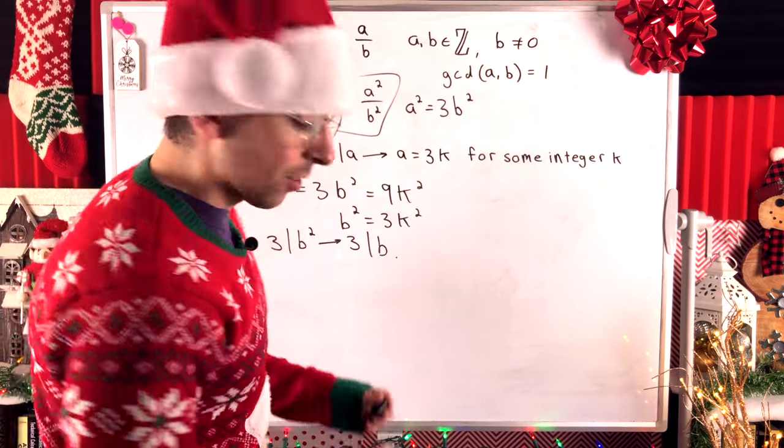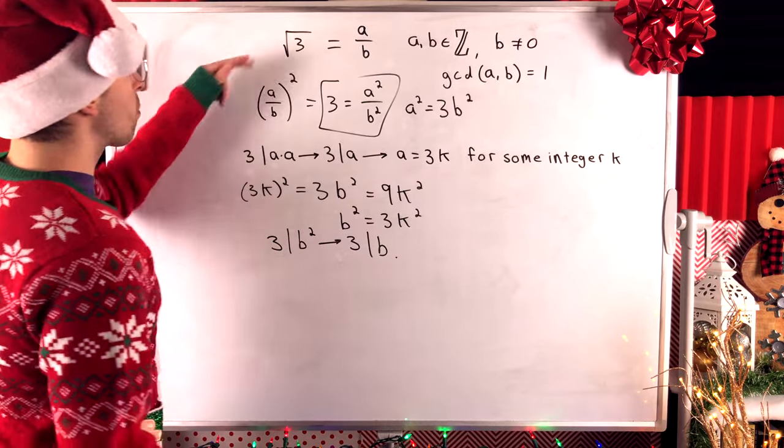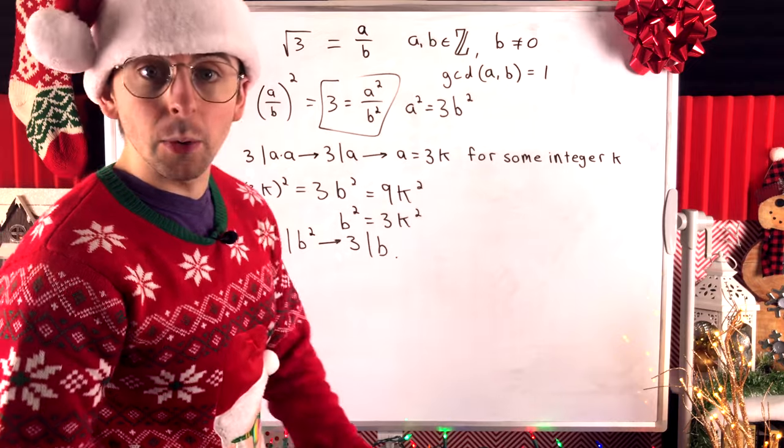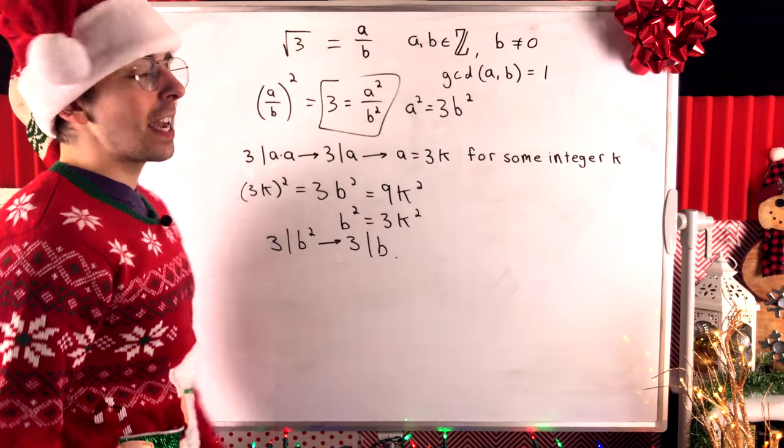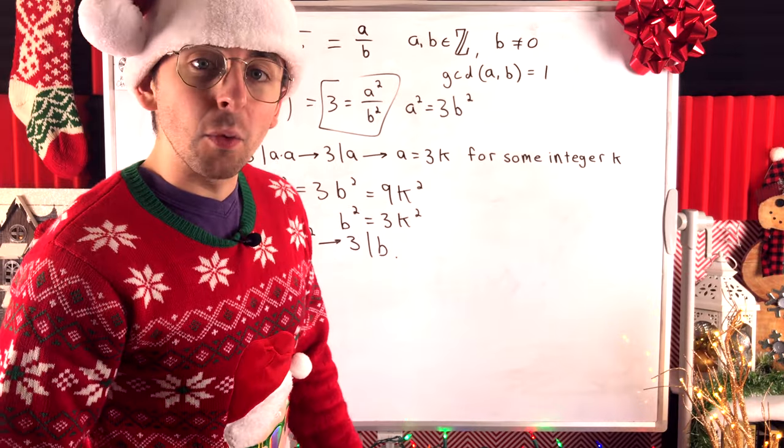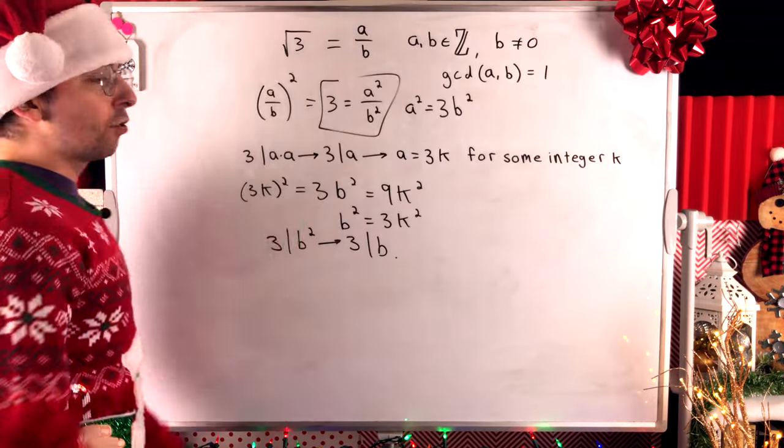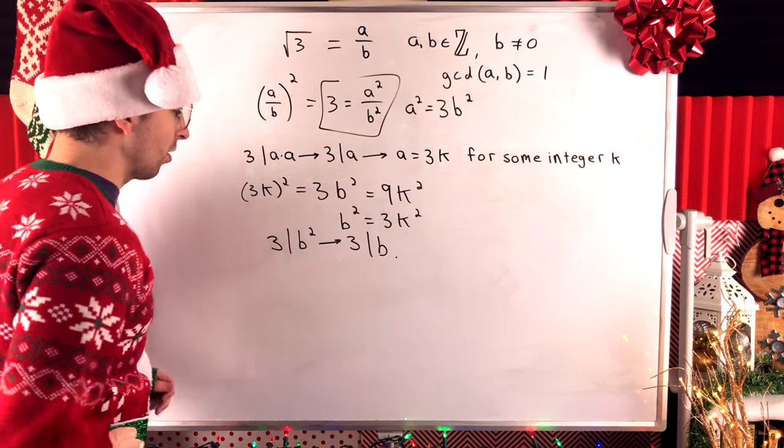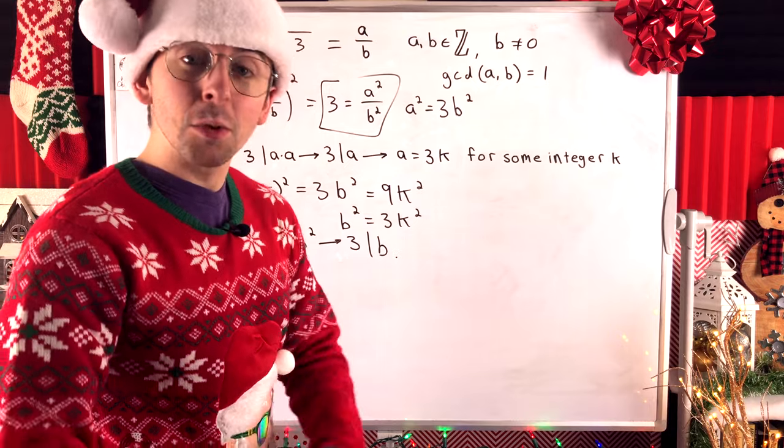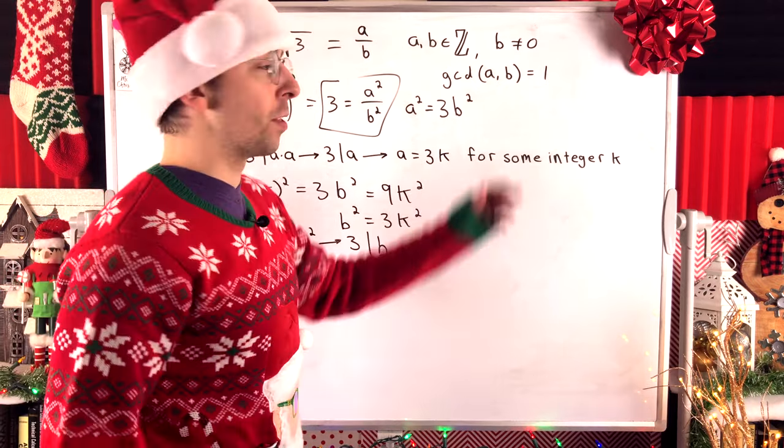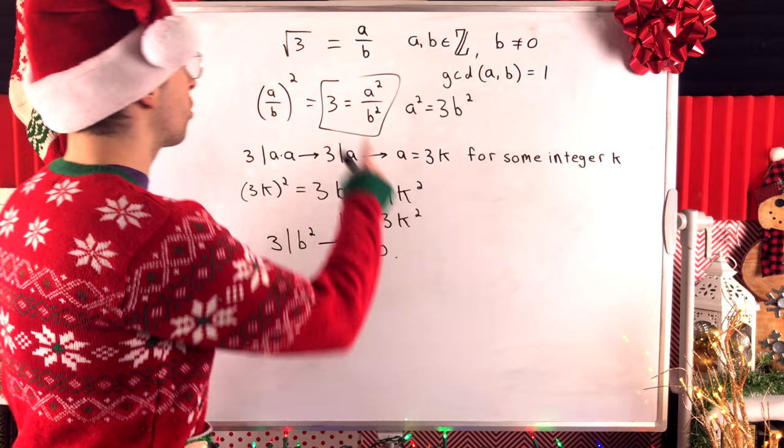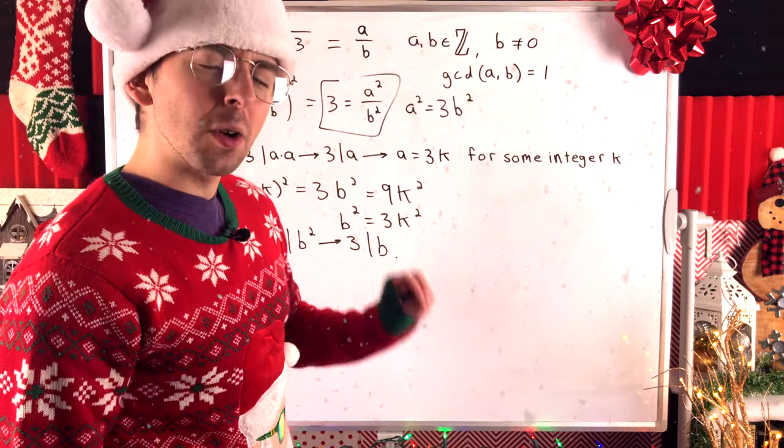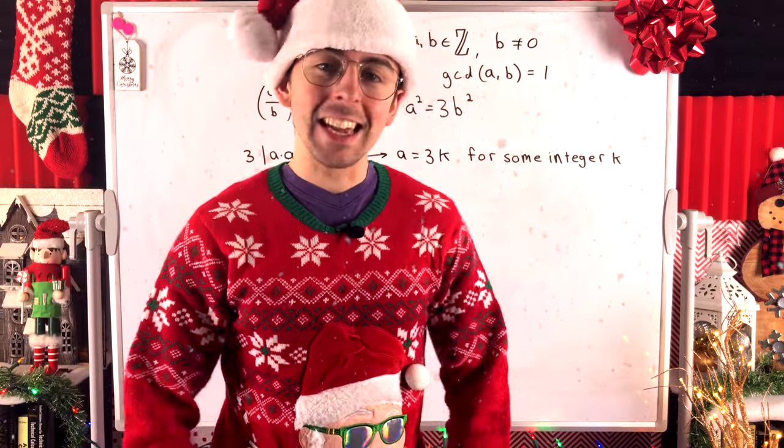And that is our contradiction. We assumed that the square root of 3 was rational, meaning we could write it as a ratio of integers in lowest terms, meaning that the numerator and denominator had no common factors other than 1. But we just showed, assuming this forces 3 to be a factor of A, as we saw there, and 3 is a factor of B. So, they do have a common factor other than 1. And that's a contradiction. Thus, the square root of 3 cannot be written as the ratio of integers. And so, the square root of 3 is indeed irrational.